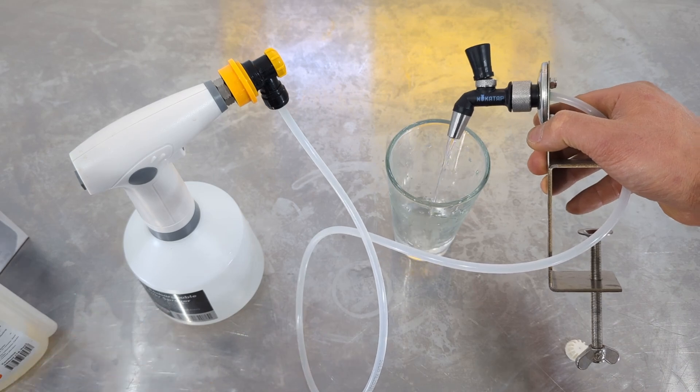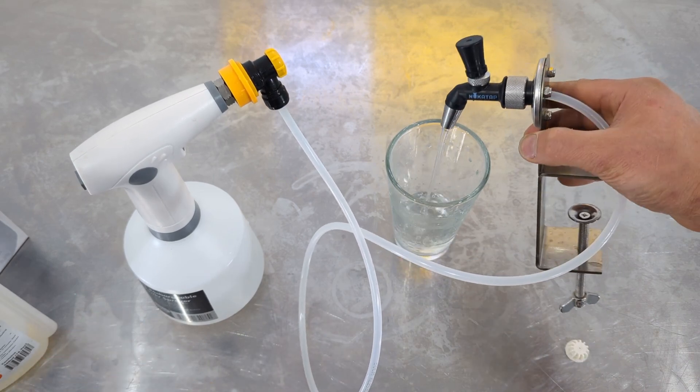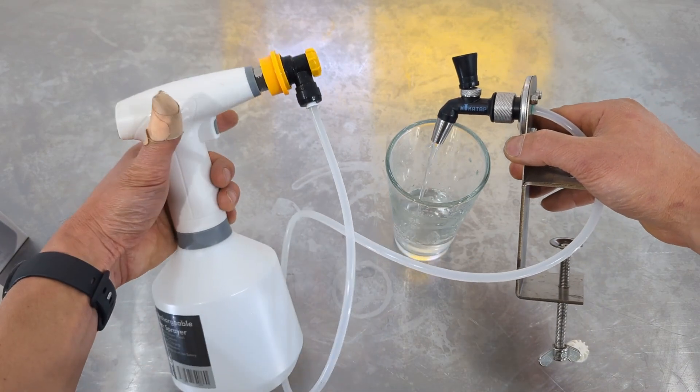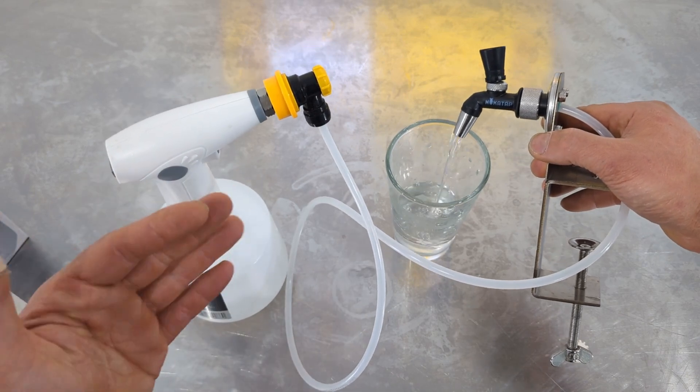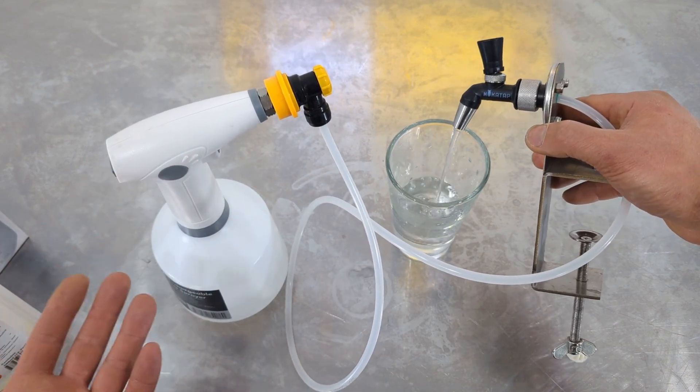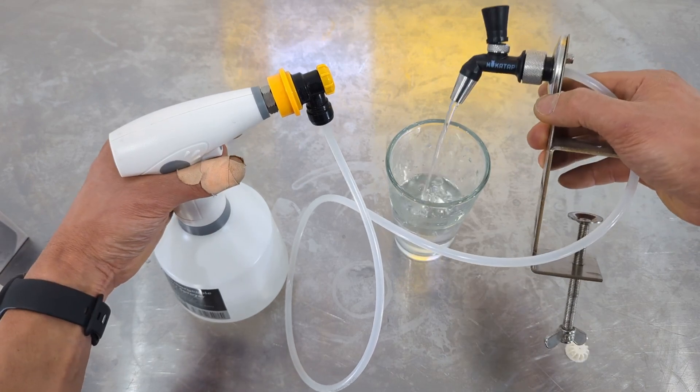So what an easy way to clean out your beer or gas lines. You can do this on your kegerator or any type of keg system, that three bar pressure should be enough to push through pretty much any type of keg system even like a large cold plate or something like that.